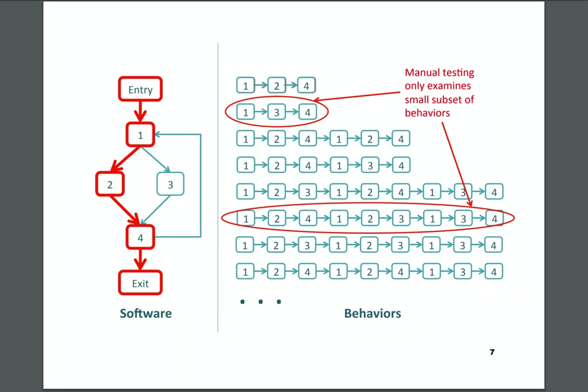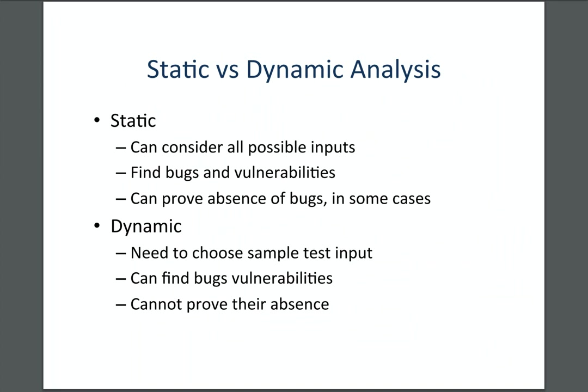Dynamic analysis requires picking inputs hopefully intelligently to lead you to a security violation, crash, or unexpected behavior. Dynamic analysis is really good at showing there is a bug — if you find an input that breaks your program, that's extremely strong evidence. But it's impossible in general to prove the absence of bugs by testing, because you'd have to test every single input. There are approaches that combine static and dynamic methods, so they're not mutually exclusive.